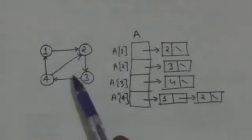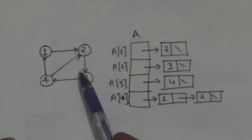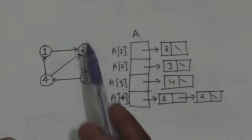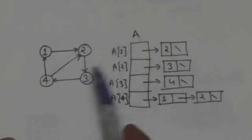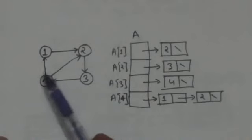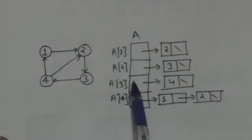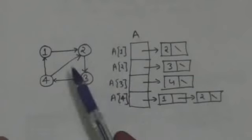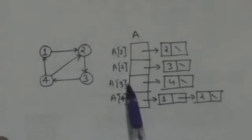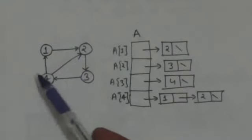Now see vertex 2. Vertex 3 is adjacent to vertex 2. So A2, the second element of array A, represents a linked list which contains the vertices adjacent to vertex 2. This linked list contains only vertex 3. Now see vertex 3: vertex 4 is adjacent to vertex 3. So A3, the third element of array A, represents the linked list of vertices adjacent to vertex 3, and this linked list contains only vertex 4.